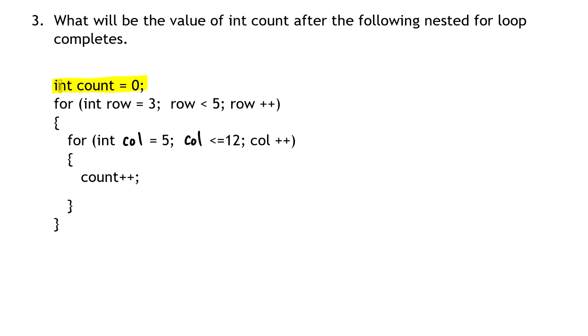You can see that count is starting out at zero, and at the end of execution of the nested for loop, count will be something else. The question is, what?